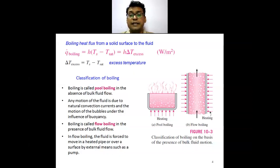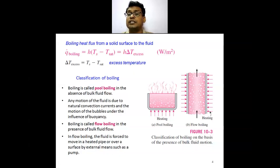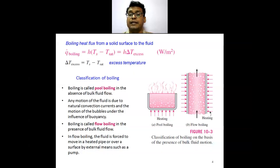In flow boiling, the bulk fluid is in motion — the fluid is moving, which is why it is called flow boiling, also known as forced boiling. The fluid is forced to move in a heated pipe or surface by external means such as a pump. This can be in an inclined tube, horizontal tube, or an inner vessel where the fluid is moving due to an agitation process.